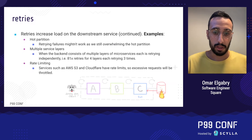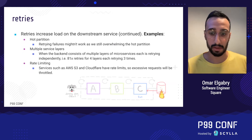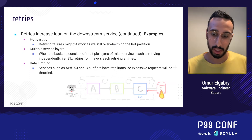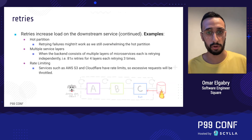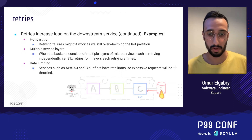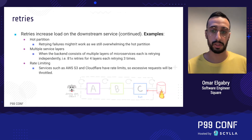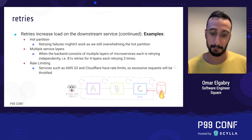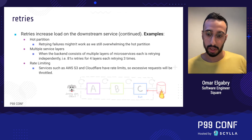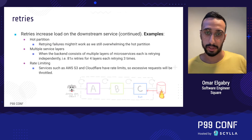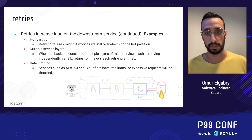Services such as AWS S3 and Cloudflare have rate limits, so excessive requests will be throttled. Too many retries is not so different from a service attack. Throughout the rest of this session, we will see different solutions to mitigate the risks of retries.